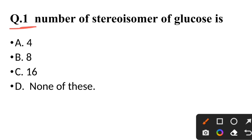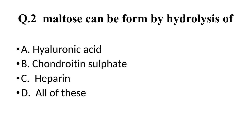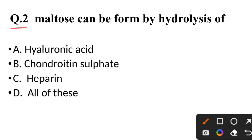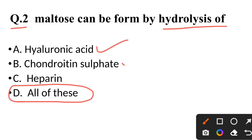Question 1: The number of stereoisomers of glucose is — correct answer is 16 stereoisomers of glucose. Question 2: Maltose can be formed by hydrolysis of — correct answer is all of these: hyaluronic acid, chondroitin sulfate, and heparin.